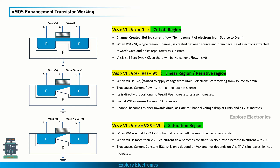In the previous video we saw the nMOS enhancement mode transistor and its working. If we categorize the working into three regions, the first is the cutoff region. In the cutoff region, the gate voltage must be greater than the threshold voltage, which is the minimum voltage required to turn on the transistor. When VGS is greater than VT but VDS is zero, no current flows, but a channel is formed between drain and source.